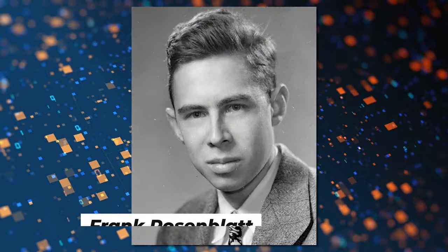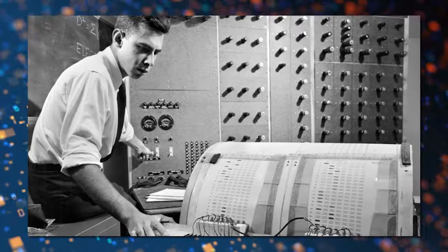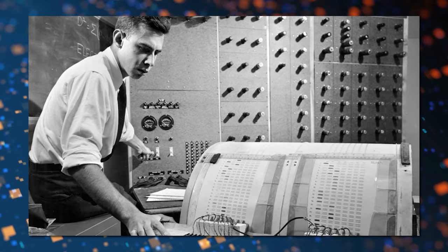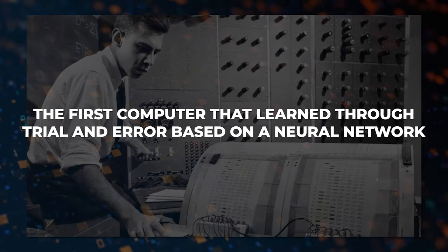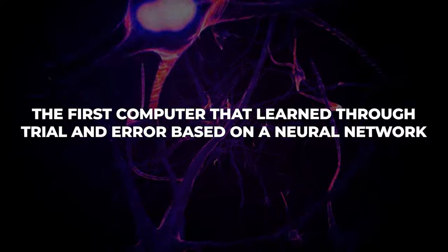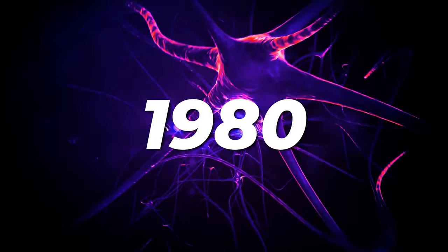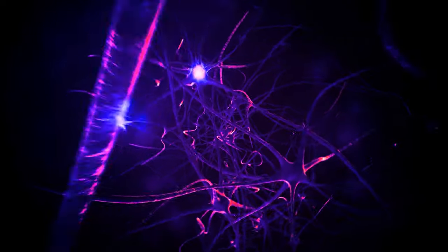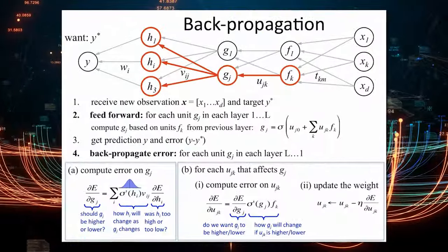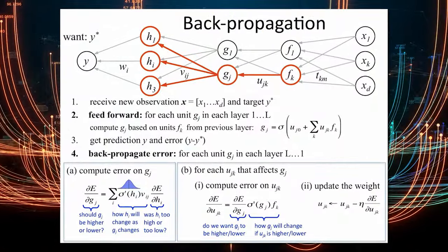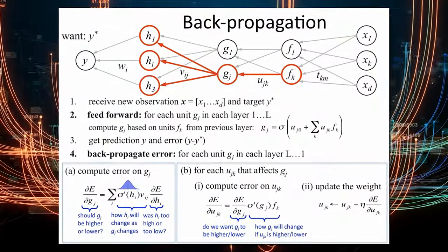In 1967, Frank Rosenblatt developed the Mark I Perceptron, the first computer that learned through trial and error based on a neural network. The 1980s saw a surge in the popularity of neural networks with the development of back-propagation algorithms, which allowed for self-training in AI applications.